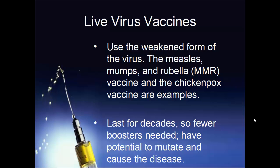The first group is live virus vaccines. These use the weakened — also called attenuated — form of the virus, so you're actually getting the virus that causes that disease, but in a very weakened form. Common examples include the measles, mumps, and rubella (MMR) vaccine and also the chickenpox, or varicella, vaccine.